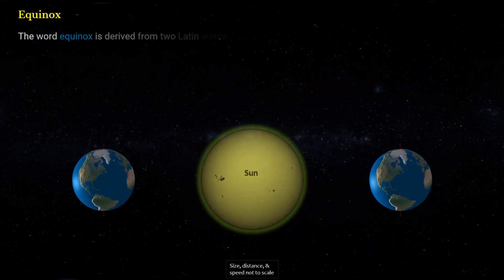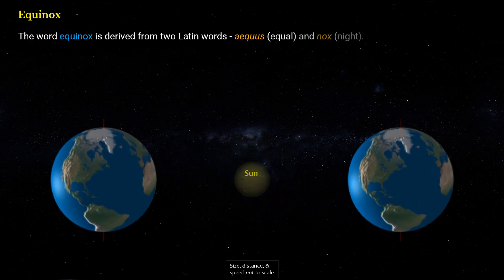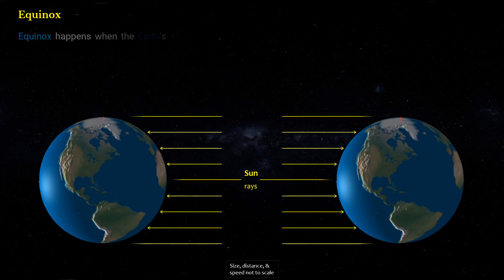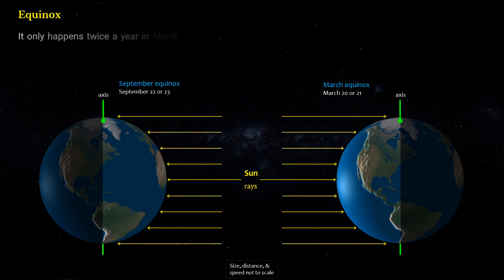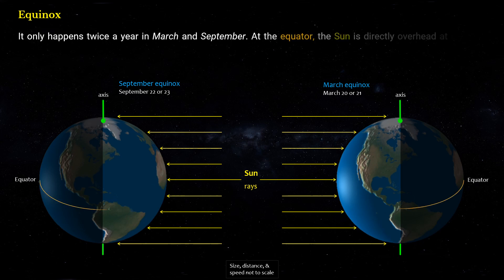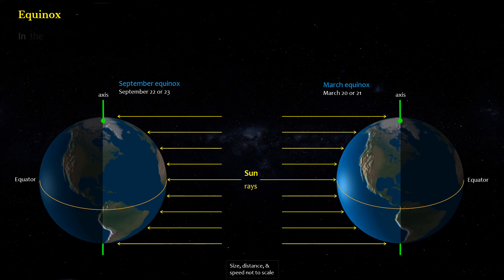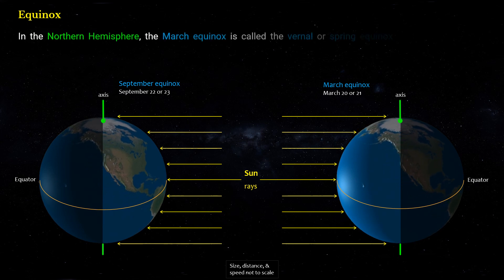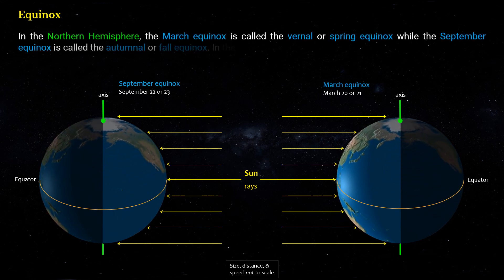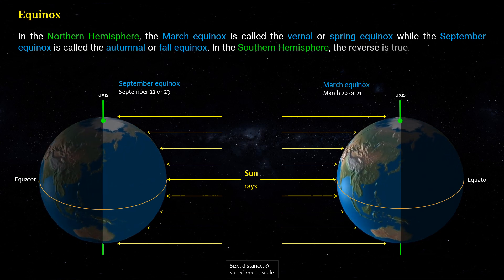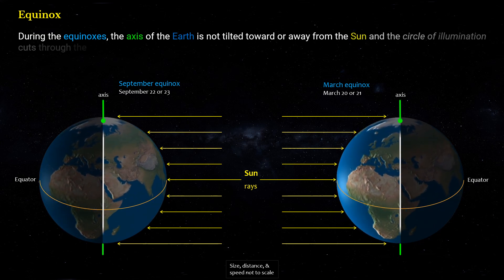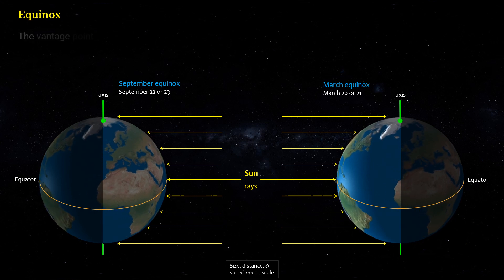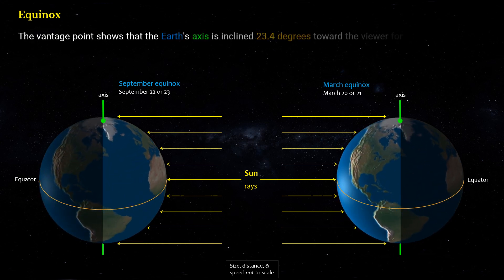The word equinox is derived from two Latin words: equus, meaning equal, and nox, meaning night. Equinox happens when the Earth's axis is tilted neither toward nor away from the Sun, resulting in a nearly equal amount of daylight and darkness at all latitudes. It only happens twice a year, in March and September. At the equator, the Sun is directly overhead at noon on these two equinoxes. In the Northern Hemisphere, the March equinox is called the Vernal or Spring equinox, while the September equinox is called the Autumnal or Fall equinox. In the Southern Hemisphere, the reverse is true. During the equinoxes, the Circle of Illumination cuts through the poles. The Earth's axis is inclined 23.4 degrees toward the viewer for both dates, and the red circles shown are the Arctic Circle.